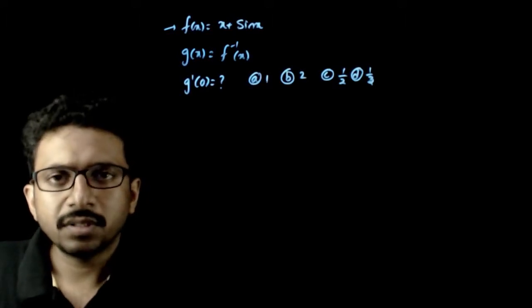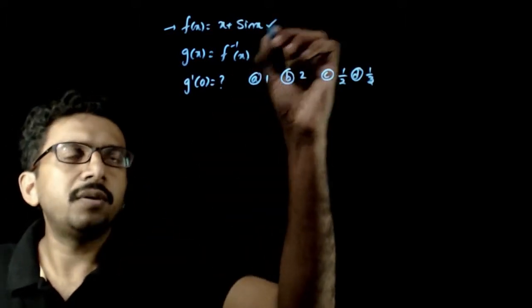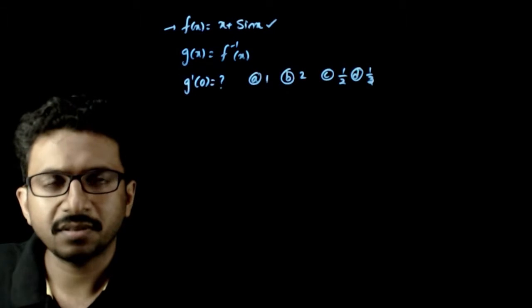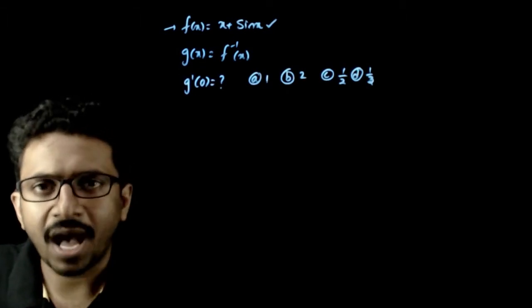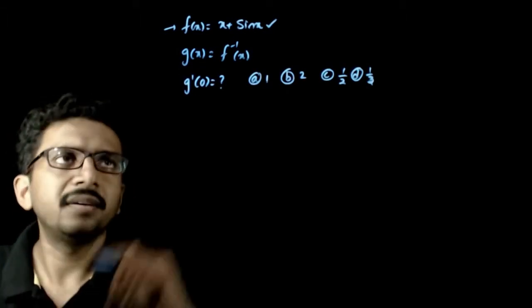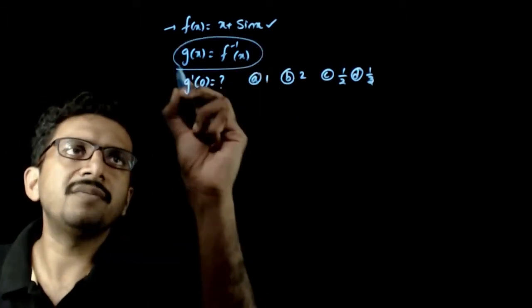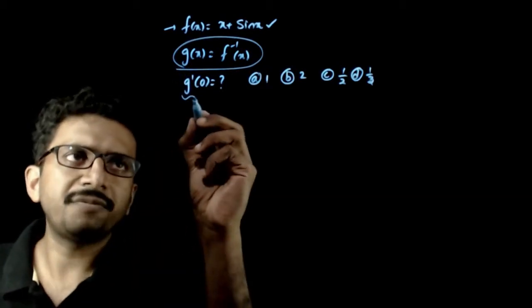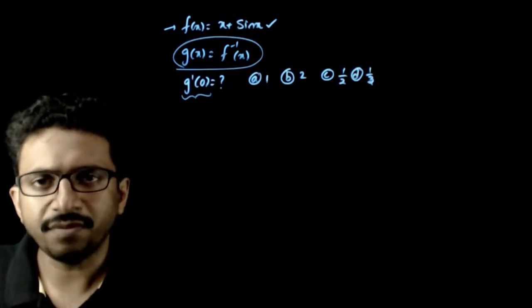Welcome students. This question: given f(x) = x + sin x, where f(x) is defined from R to R, and g(x) is the inverse of f(x). You are asked to find the value of g'(0).